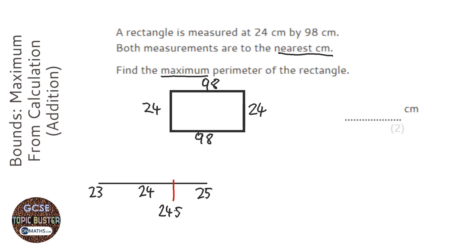We're going to do the same with 98, so 98 in the middle. Next one down it could have been is 97, next one up it could have been is 99, then the halfway point there is going to be 98.5.